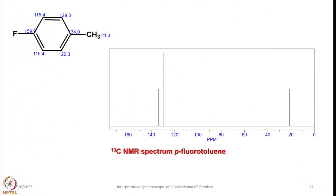One example is shown here — we have parafluorotoluene, with a fluorine group at the para position. Looking at this molecule, two pairs of carbons are equivalent, leaving 5 unique carbon environments — 1, 2, 3, 4, 5 — and indeed we see 5 signals in the spectrum.